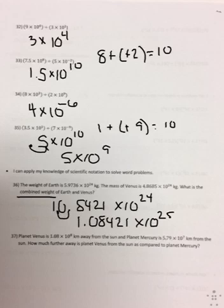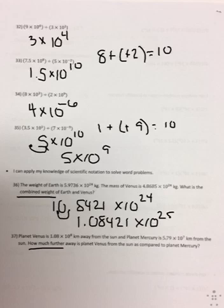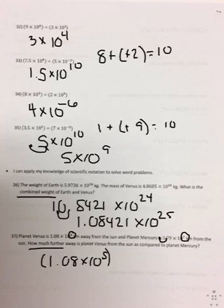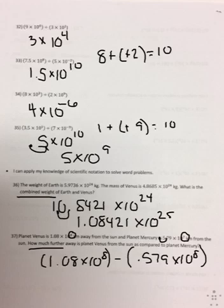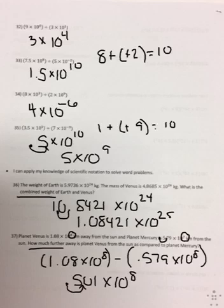The last problem: Planet Venus is 1.08 times 10 to the 8th kilometers away from the Sun, and Planet Mercury is 5.79 times 10 to the 7th kilometers from the Sun. How much further away is Planet Venus from the Sun compared to Planet Mercury? We are subtracting. The exponents have to be the same, so I keep the 8 and change the 7 by moving the decimal up. The problem is 1.08 times 10 to the 8th minus 0.579 times 10 to the 8th. Subtracting 1.08 minus 0.579 gives 0.501 times 10 to the 8th. Moving the decimal back one place gives 5.01 times 10 to the 7th power.